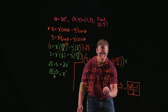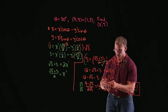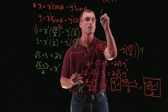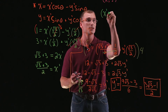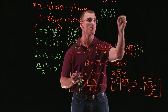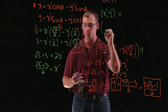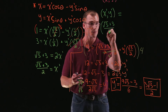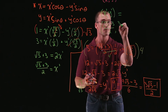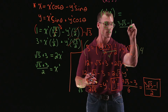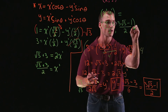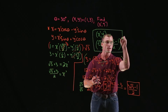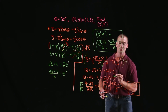So there is our y prime. Putting this all together since we wanted a point: our x prime y prime is equal to the point where x prime is root 3 plus 3 over 2, and y prime is 3 root 3 minus 1 over 2. There is our translated point. Thank you very much.